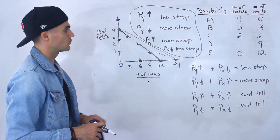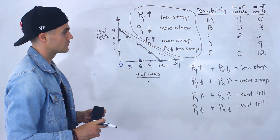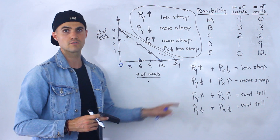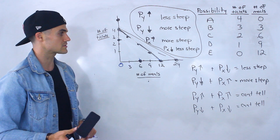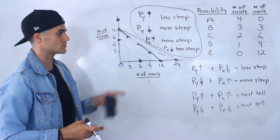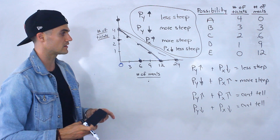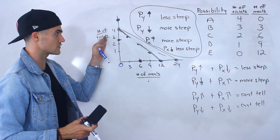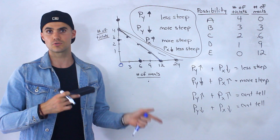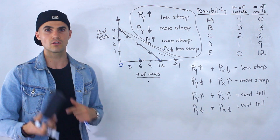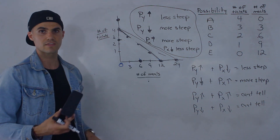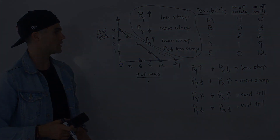These are just a couple of relationships worth knowing, along with combinations of them. You may get questions about how the budget line is affected when a price changes, or how the opportunity cost is going to change. Knowing these relationships is important for understanding the budget line.